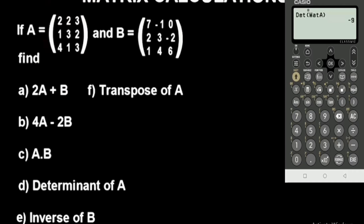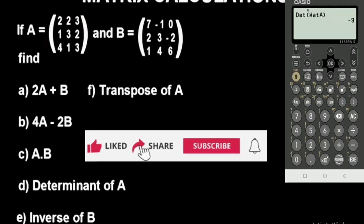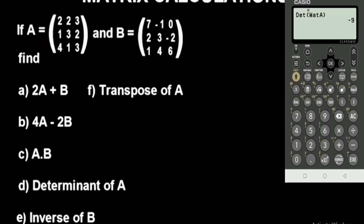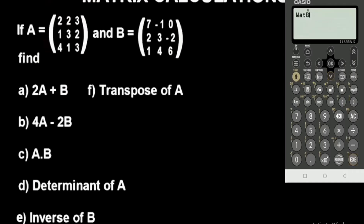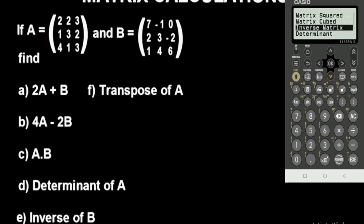If you are new to this channel, please subscribe by hitting the subscribe button for more videos. Now let's solve for the inverse of Matrix B. Press the catalog button, matrix option, select Mat B, go back to catalog, matrix option, matrix calculations, select inverse matrix, and press execute. This gives you the inverse of the matrix.